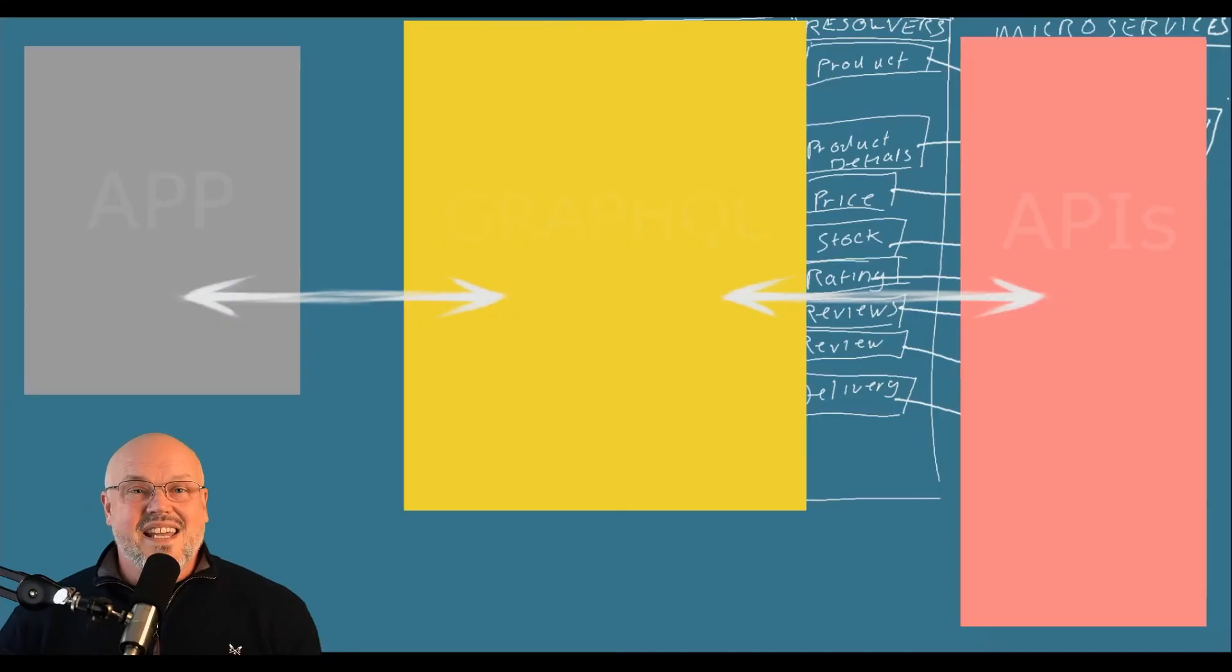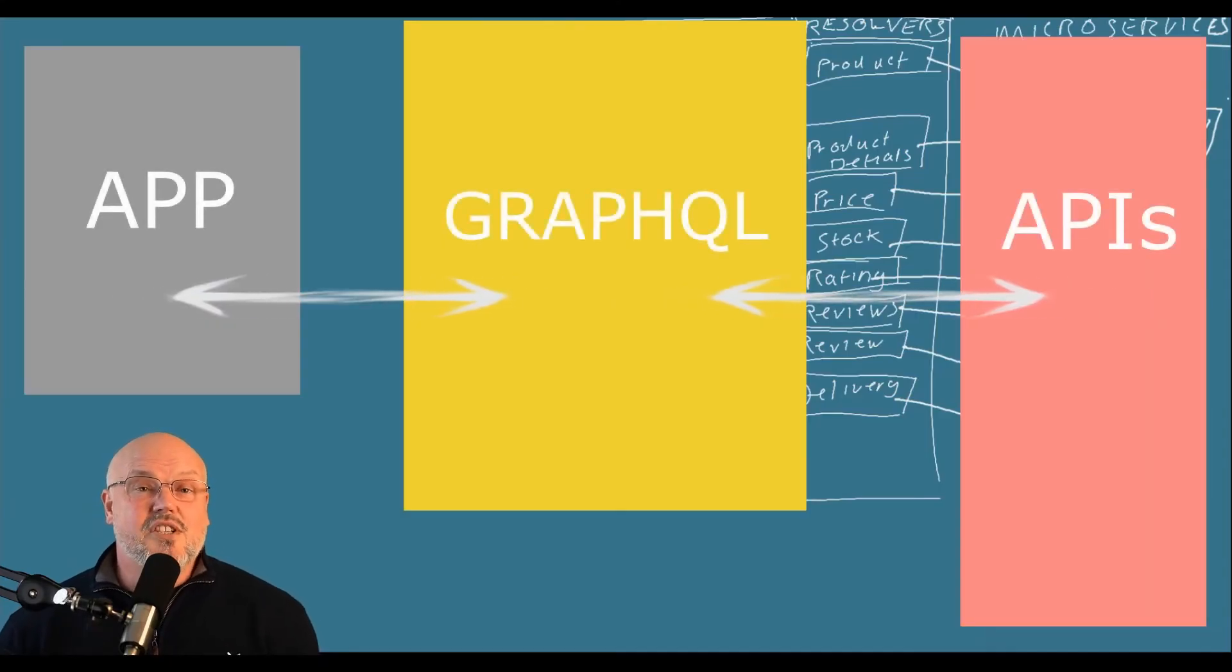GraphQL is a new way for systems to talk to each other. It's a way of defining a single answer to many questions and only getting back the data that you need. It is, in effect, a query language for APIs.